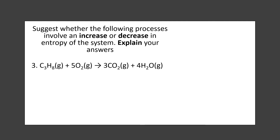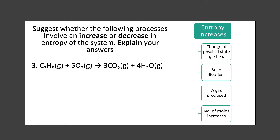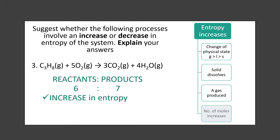The third example: two gases reacting and forming two gases. Would the entropy increase or decrease? Here we can't really talk about a change in physical state — they're all gases. So let's look at the number of particles on both sides. The number of moles on the reactant side is six and on the product side is seven. There are more particles on the product side, which means there will be more ways of arranging the particles, hence increasing the entropy. Therefore, we expect a positive value for the entropy.